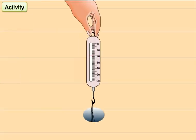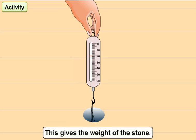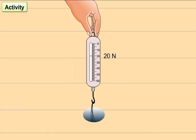Look at this activity. Students, take a spring balance with a piece of stone hanging from its hook. Note its reading. This gives the weight of the stone. Let us say it is 20 Newton.